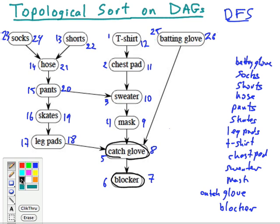Now, suppose you didn't like this ordering — you thought it was kind of silly to put your batting glove on first. Maybe you want to do that after you've done everything else because it's difficult to attach the chest pad. So you would model that dependency with an arrow that says you want to put the chest pad on before the batting glove. You could start the search from different nodes and get different orderings, but they would all respect the orderings represented in this graph.